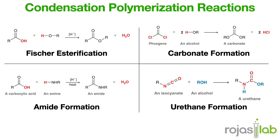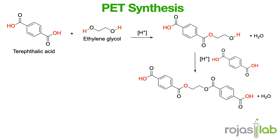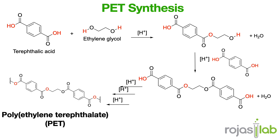As we've seen previously, the term condensation is used to characterize any reaction in which two molecules undergo an addition accompanied by the loss of a small molecule like water, carbon dioxide, or even nitrogen gas. As an example, consider the formation of polyethylene terephthalate, also known as PET, which is used to make soft drink bottles. PET is prepared by successive Fischer Esterification reactions. Since the polymer is generated via condensation reactions, we call this a condensation polymer.